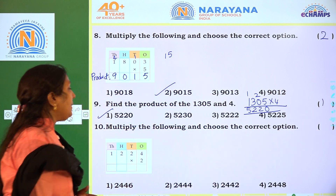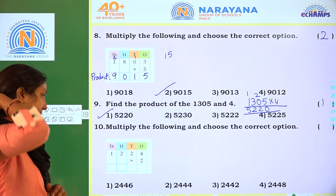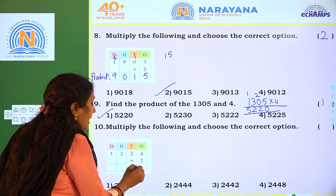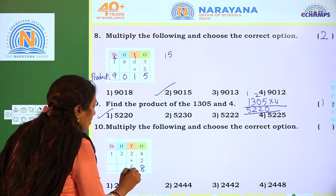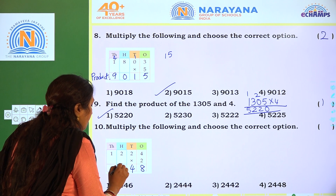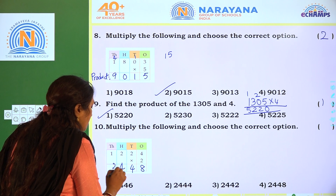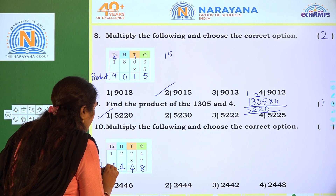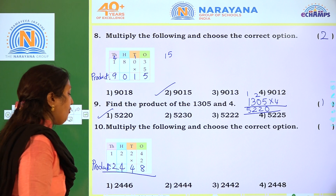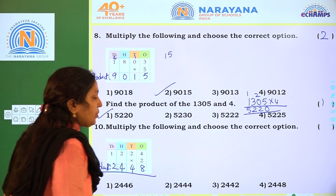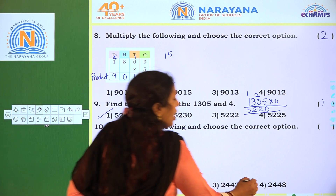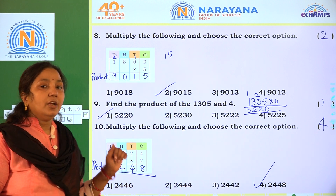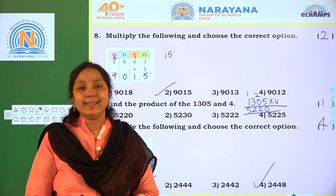Next: multiply the following and choose the correct option. 1,224 into 2. 2 4's are 8, 2 2's are 4, 2 2's are 4, 2 1's are 2. The product is 2,448 — option 4. Got it, children? Practice once again. Thank you.